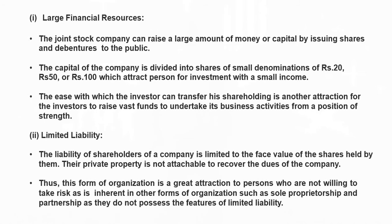So we say that in joint stock companies, liability of shareholders is limited to the amount of shares held by them. If the company makes a loss, their private property cannot be attached to recover the company's dues. Thus this form of organisation is a great attraction to persons who are not willing to take unlimited risk, as inherited in other forms such as sole proprietorship and partnership, which do not have the feature of limited liability. You can also refer to our earlier videos on sole proprietorship and partnership.